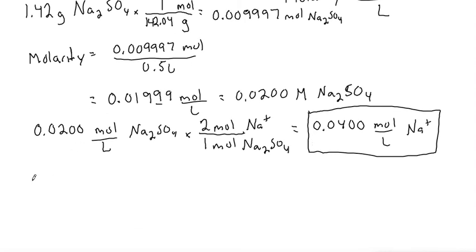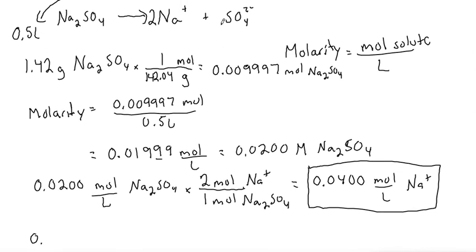And then similarly, we need to also convert to the molarity of the SO4 2- ion. Those have a one-to-one coefficient balance. So that would just be 0.0200 mole per liter of the Na2SO4 again. That'll be a one-to-one conversion. One mole of Na2SO4 is one mole of SO4 2-.